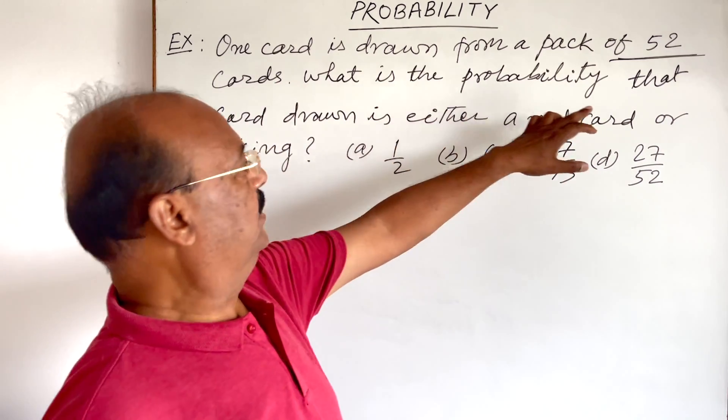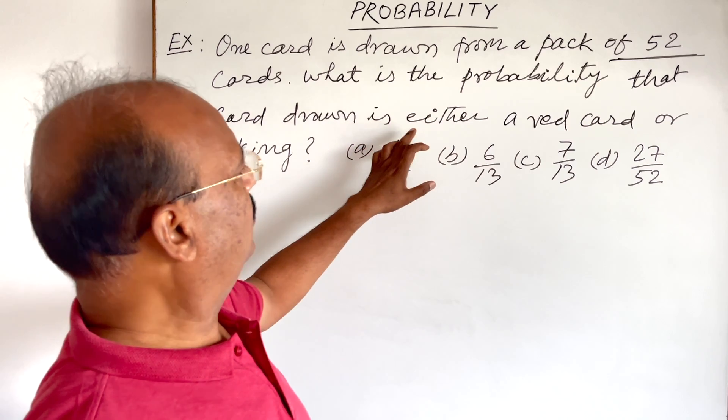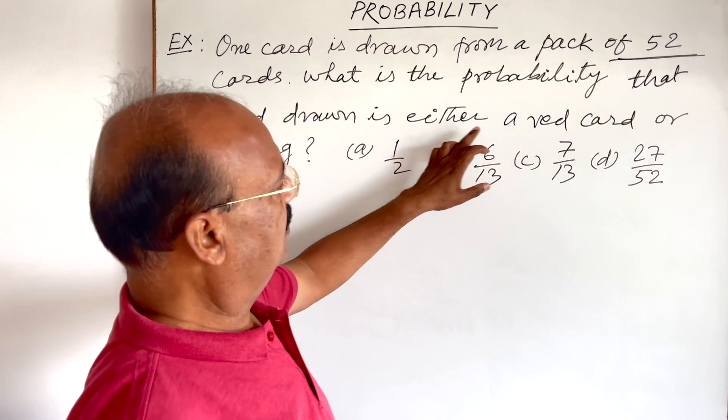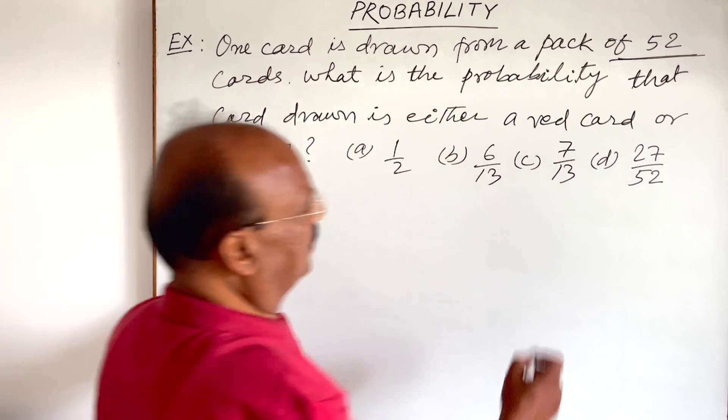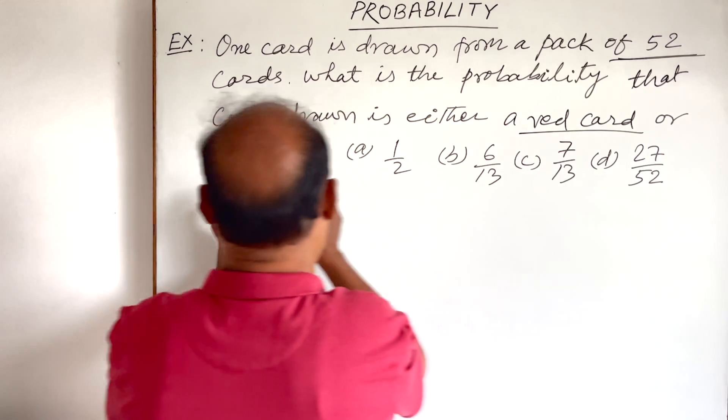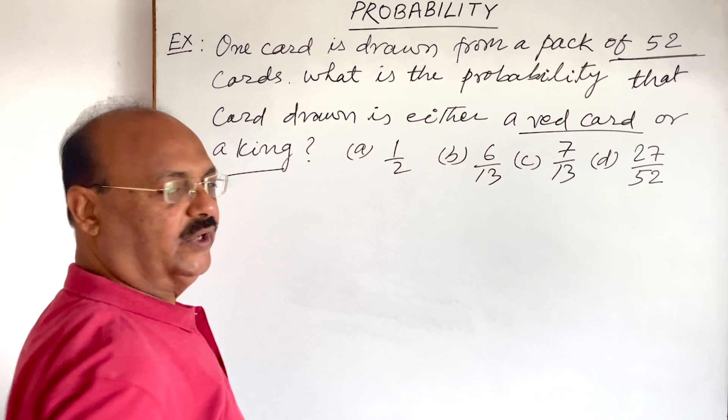What is the probability that the card drawn is either a red card or a king? Okay, interesting question.